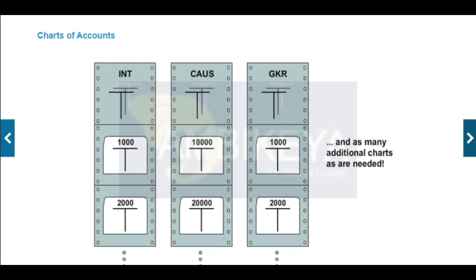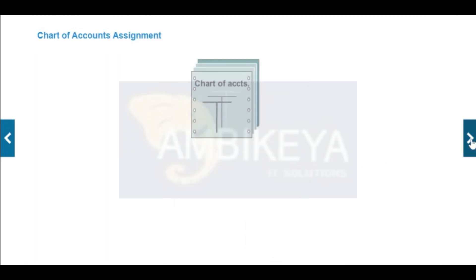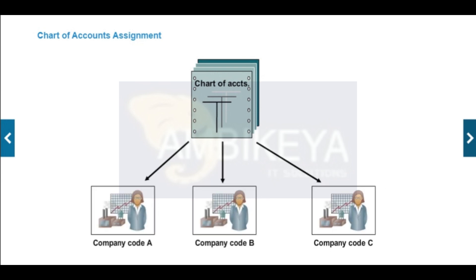The chart of accounts contains the definitions of all general ledger accounts in an ordered form. The definitions consist mainly of the account number, account name, and the type of general ledger account — that is, whether the account is a profit and loss type account or a balance sheet type account. You can define an unlimited number of charts of accounts in the SAP system, and many country-specific charts of accounts are included in the standard system. For each company code, you must specify one chart of accounts for the general ledger, referred to as its operating chart of accounts. A chart of accounts can be used by multiple company codes, meaning their general ledger accounts have an identical structure.